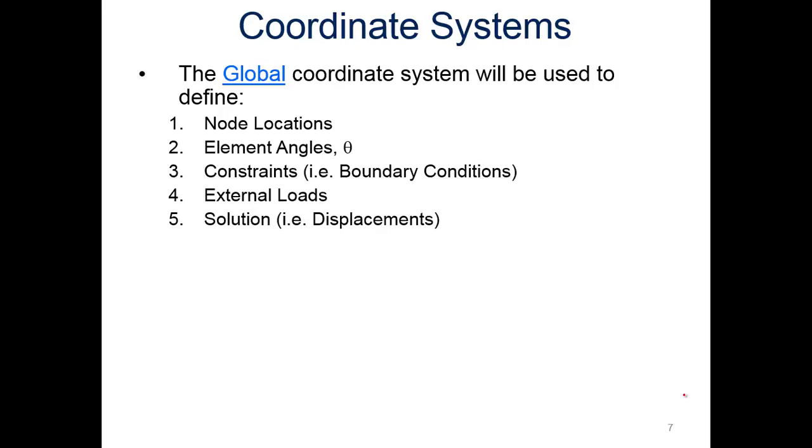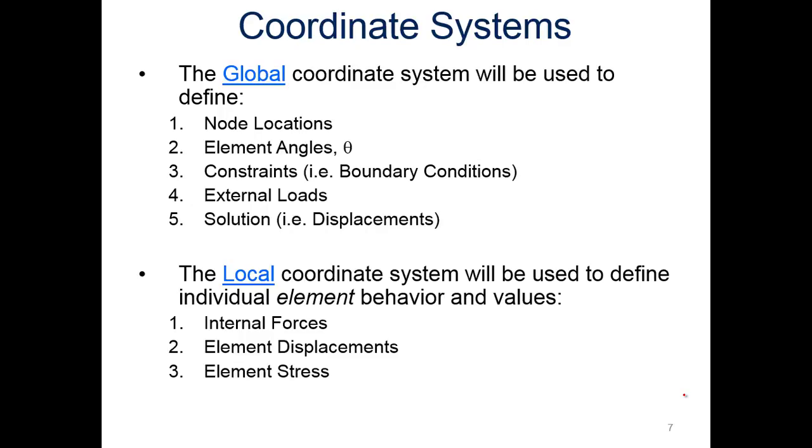Looking at the coordinate system, the global coordinate system will be used to define the node locations, element angles, constraints or boundary conditions, external loads, as well as the overall solution displacements. The local coordinate system will be used to define individual element behavior and values. Within an individual element, we're interested in internal forces, displacements of the element itself, and element stresses.